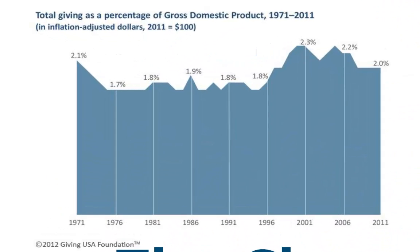First, we looked at the level of giving in the U.S. overall. This is total giving in the U.S. as a percentage of gross domestic product in the 40-year period between 1970 to the present, adjusted for inflation. And you can see that the trend, if you want to call it that, is that giving is flat. We give about 2% of our gross domestic product, adjusted for inflation, to charity nationally. So giving overall is not changing that much as a percentage of our wealth.